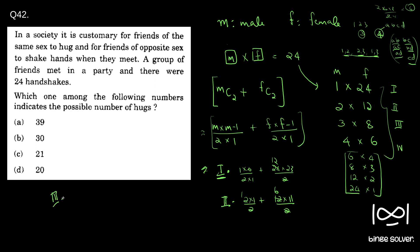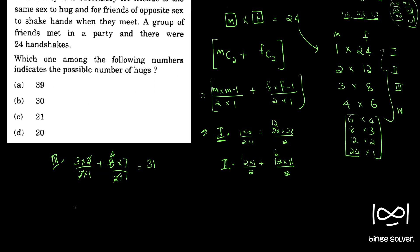So now we will check 3, 3 into 8. So 3 into 2 by 2 into 1. I'm just applying different M values and F values in this equation. Nothing more. So F is 8. So 8 into 7 by 2 into 1. So 2 cancel, 3 into 4. So here 7 into 4 is 28, 28 plus 3, which gives 31. We don't have 31 here. We have 30, but there is no 31. So 3 is also not the answer.